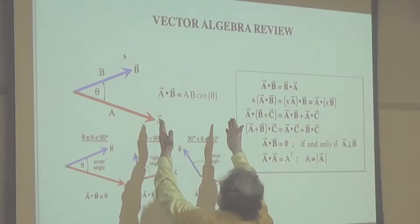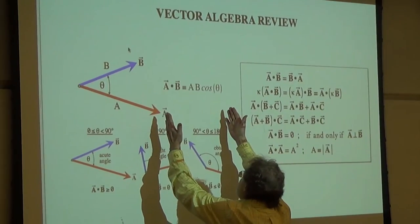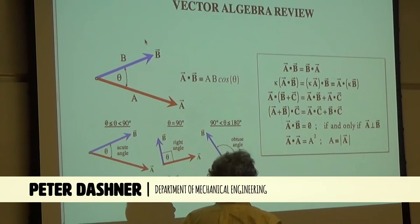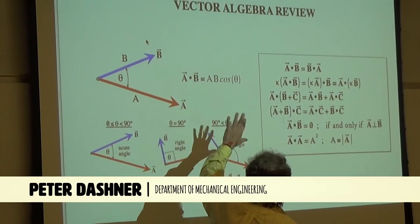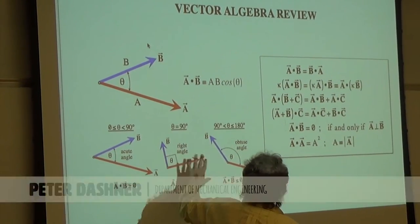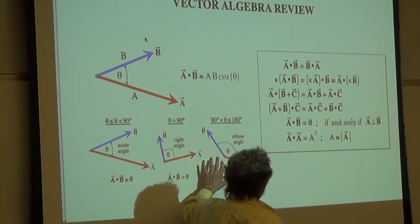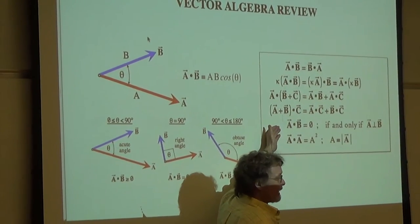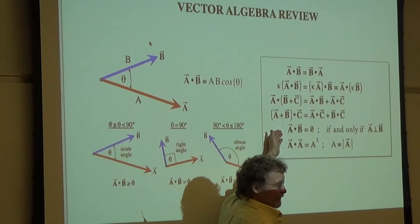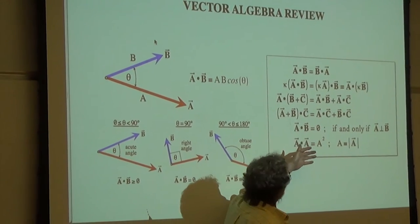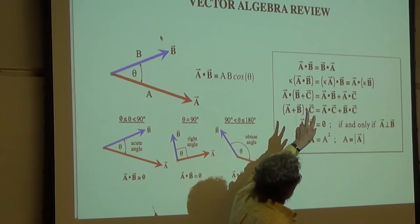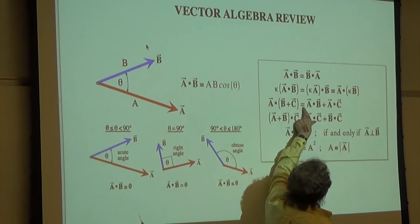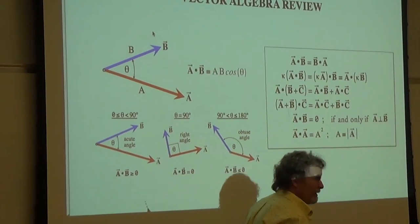You should know the geometric definition: magnitude times magnitude times cosine of an angle. But as well as knowing the geometric definitions of these operations, you also have to be aware of the algebraic, the more mathematical expressions. You should know that the dot product is commutative. You should know that the dot product has the distributive property.